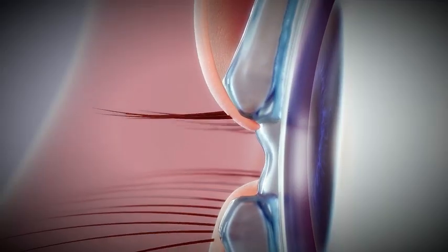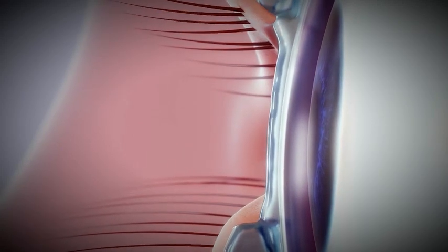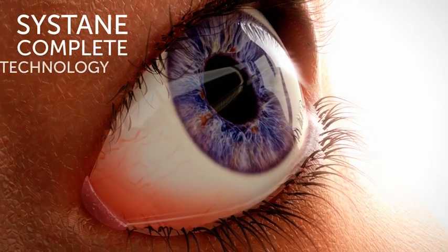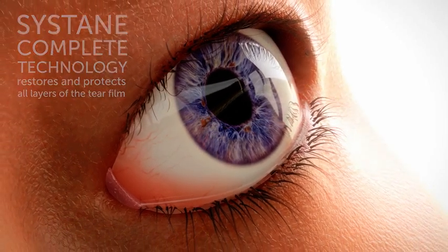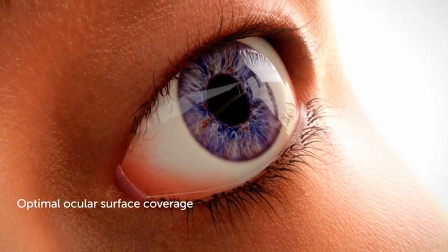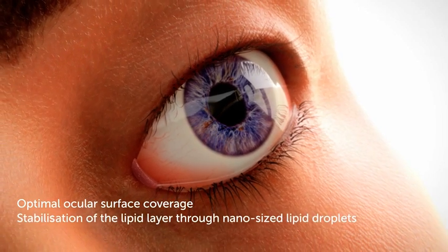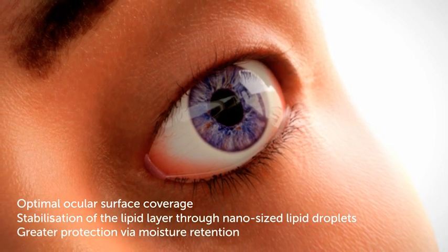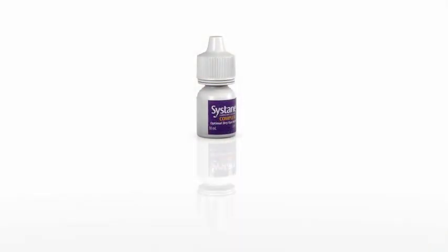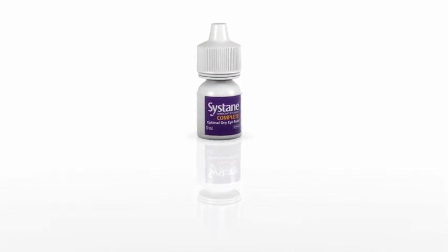The new formulation delivers more advanced lubrication that helps replenish the deficient tear film. Systane Complete technology restores and protects all layers of the tear film. It enables optimal ocular surface coverage and stabilization of the lipid layer through nano-sized lipid droplets and also provides greater protection via moisture retention. This unique product provides an advanced moisture delivery system to protect the ocular surface and address symptoms of all types of dry eye.